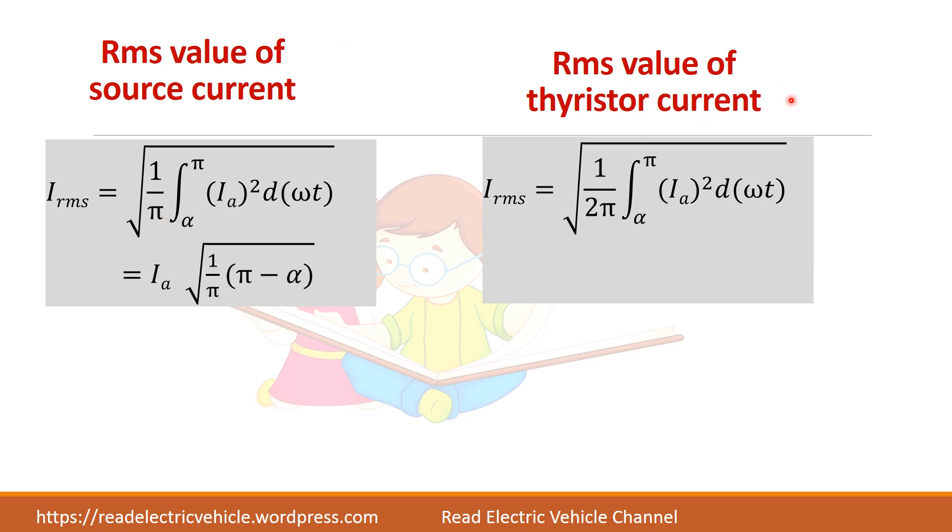Say I take thyristor current T1. It will be present only for one half cycle. Remaining half cycle another thyristor current will be there. So IRMS is equal to 1 by 2 pi. So if it is source current take it as pi. If it is thyristor current take it as 2 pi. Same formula apply it you will get this one. Only this two will be different.